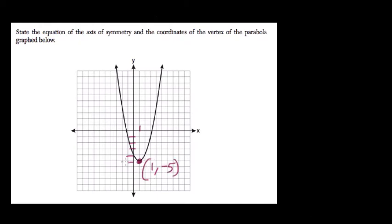And the axis of symmetry is a line that goes through the vertex and splits your parabola in two equal pieces, in this case x equals 1.